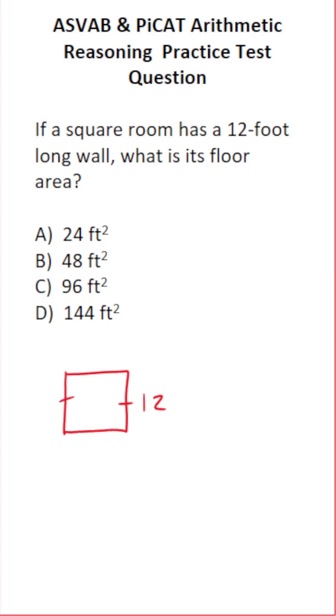So if one of its sides is 12 feet, that means all of its other sides are 12 feet. And how do you find the area of the floor? Well, we're just going to be finding the area of this square. How do you find the area of a square? Its area equals its side length squared.